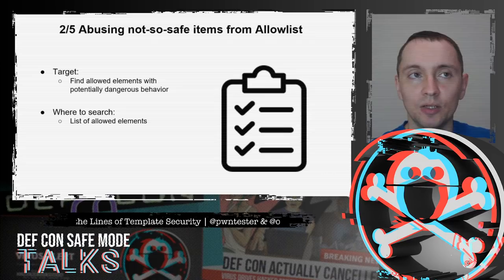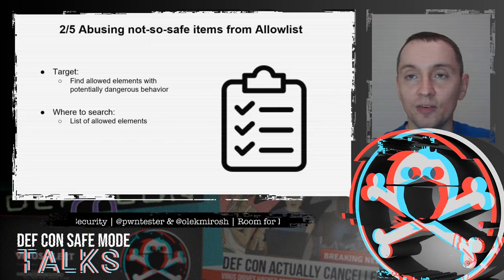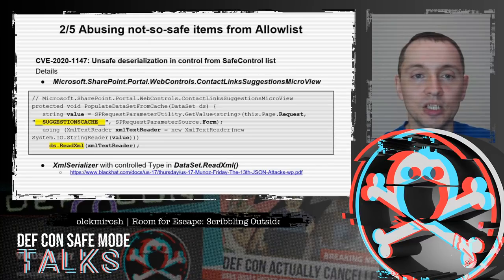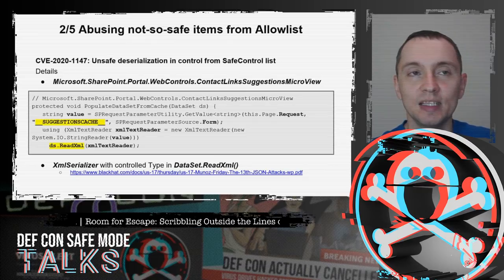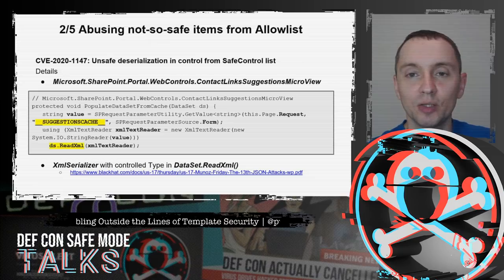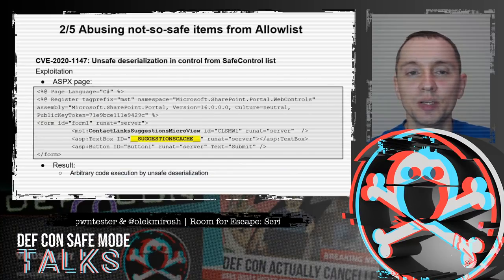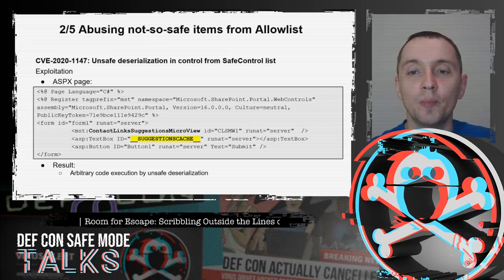The second type is allowing dangerous elements that can be used for attacks. We found an example in SharePoint's safe control list — ContactLinkSuggestionMicroView control. A request parameter is passed to the DataSet.ReadXml method. If we can control input to this method, we get data deserialized by XmlSerializer with a controlled type, which leads to arbitrary code execution. The full payload is in our white paper. We just need to place the payload in the text box and click submit.